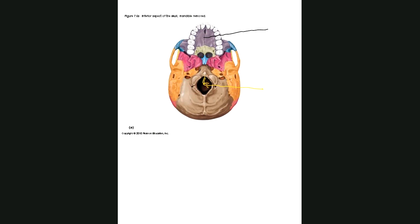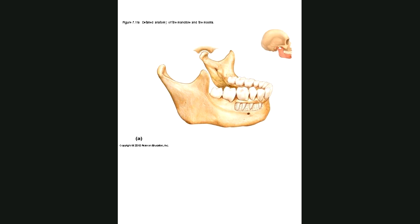This is the maxilla. It is the palatine process of the maxilla, but you just have to put maxilla. This is the palatine bone here. This is occipital mandible, and this is the ramus of the mandible. Mental foramen.